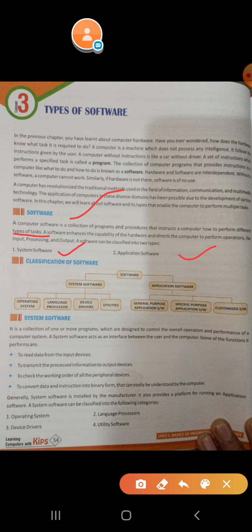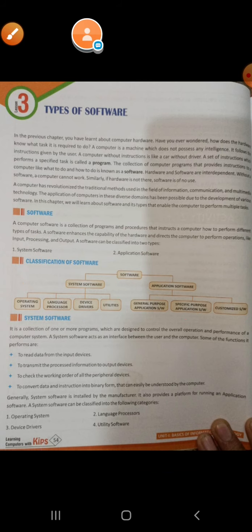As shown in the diagram, software is divided into two types: system software and application software. System software is further divided into four parts: operating system, language processor, device driver, and utility. Application software is divided into: general purpose software, specific purpose software, and customized purpose software. I am going to explain the first type — system software.